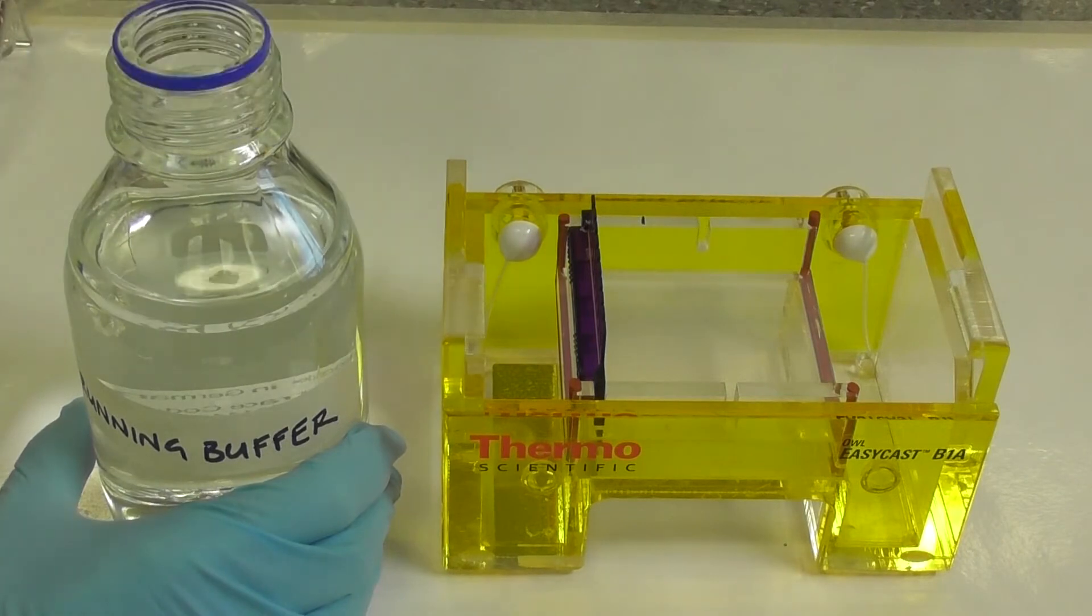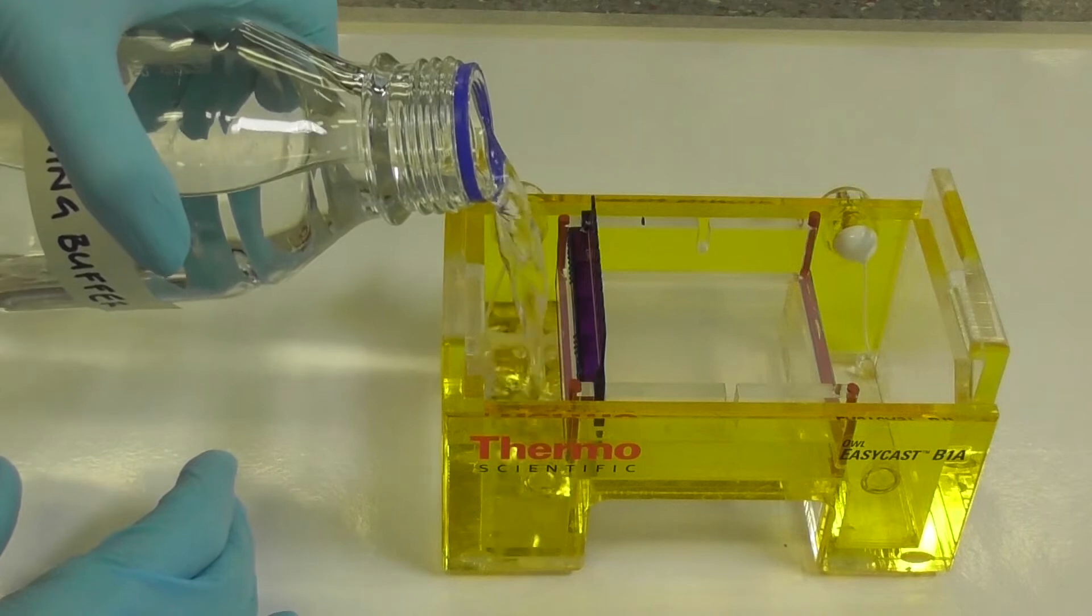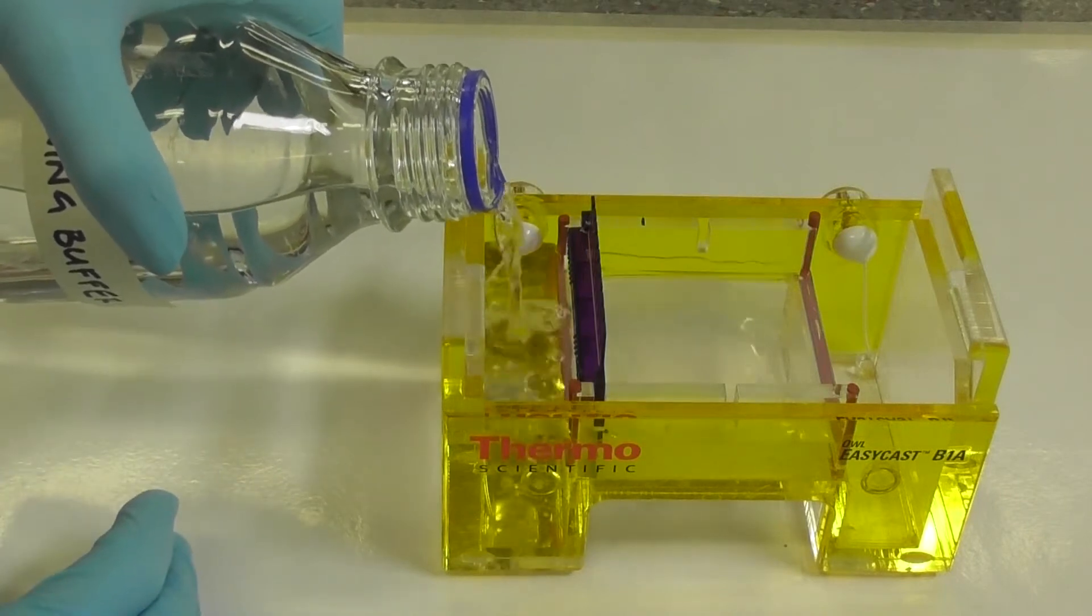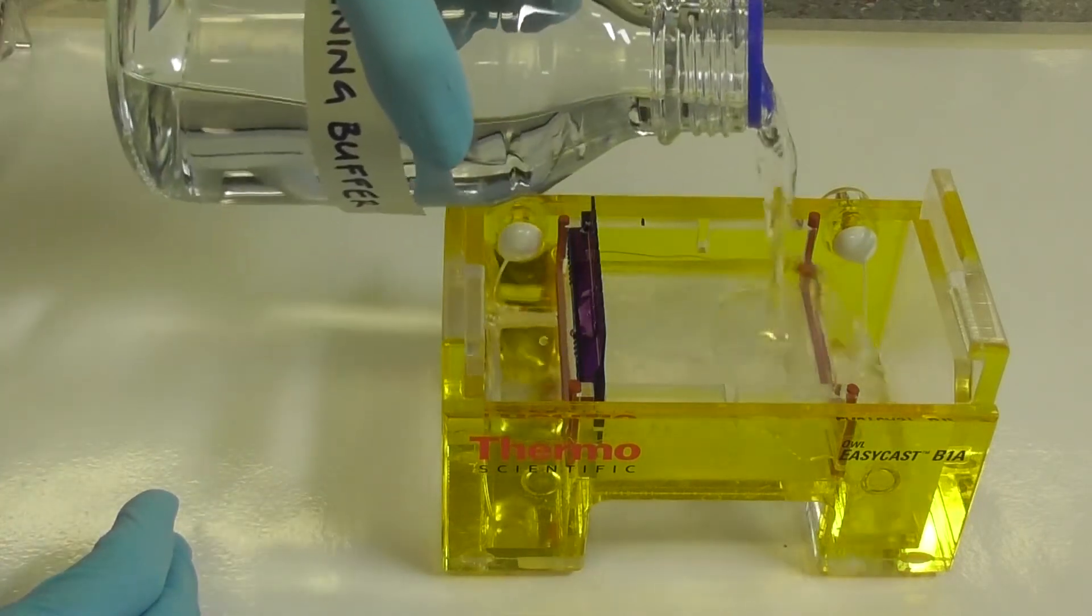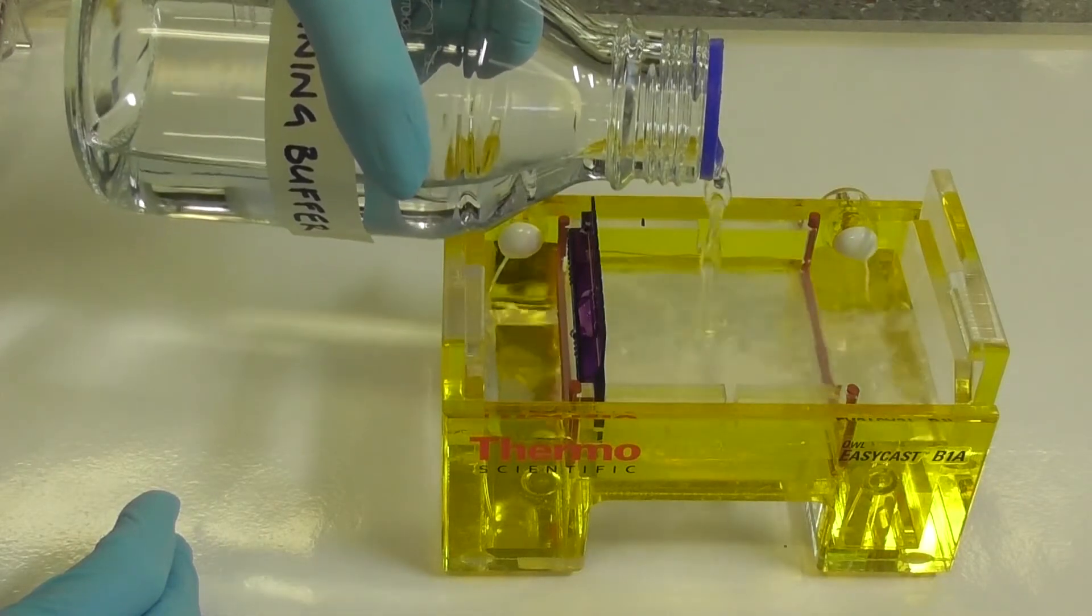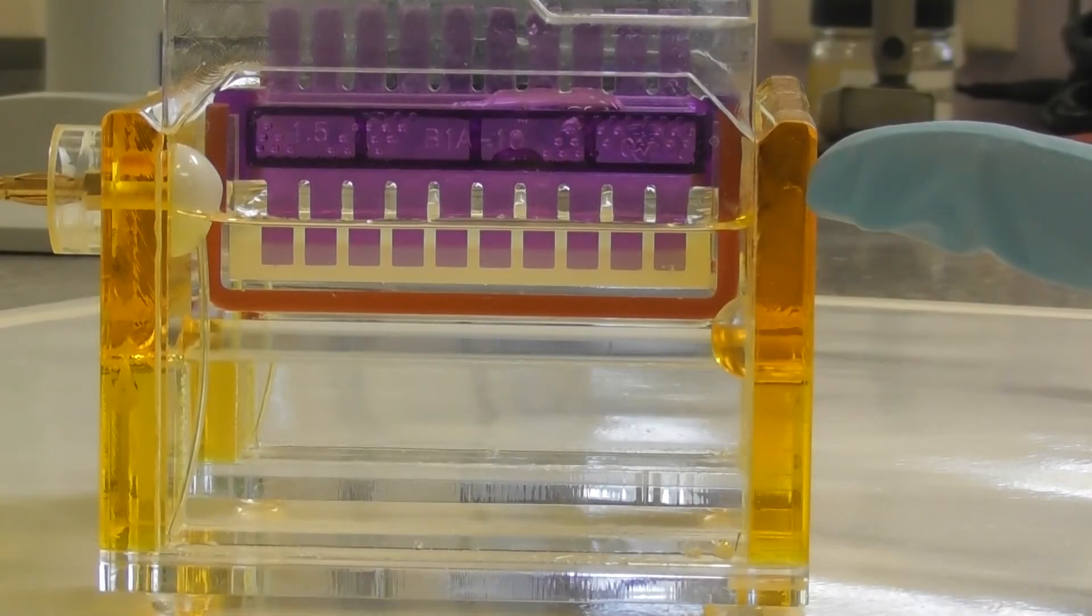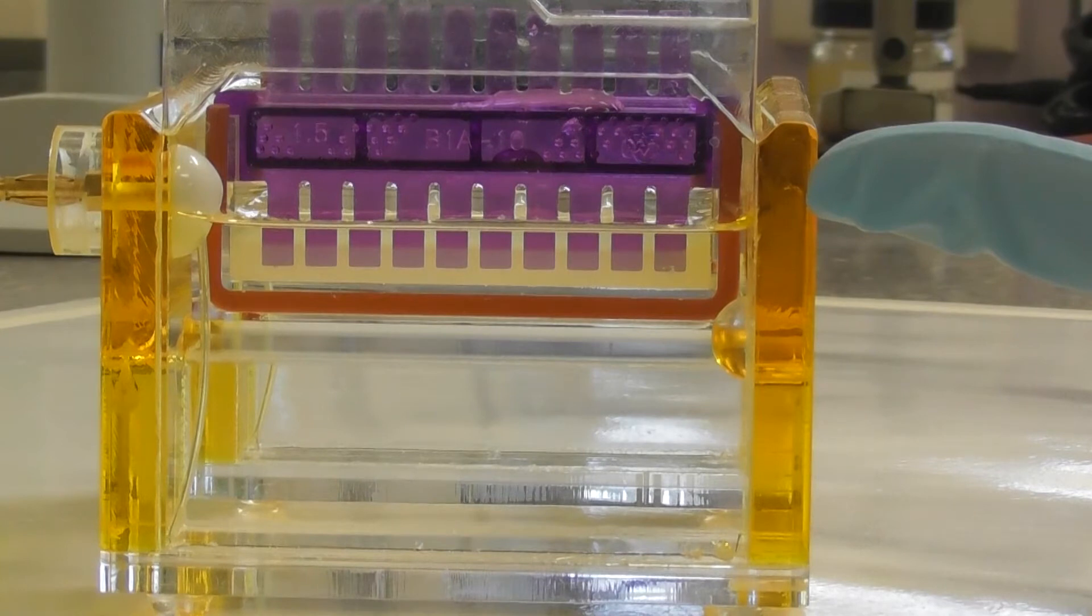Fill the gel tank with a running buffer. Start by pouring buffer in one end of the gel tank until it is full, and then complete filling by pouring over the gel and into the other end of the gel tank. A good level to fill the gel tank to is approximately the same coverage of buffer above the gel as is equivalent to the thickness of the gel, as pointed to here.